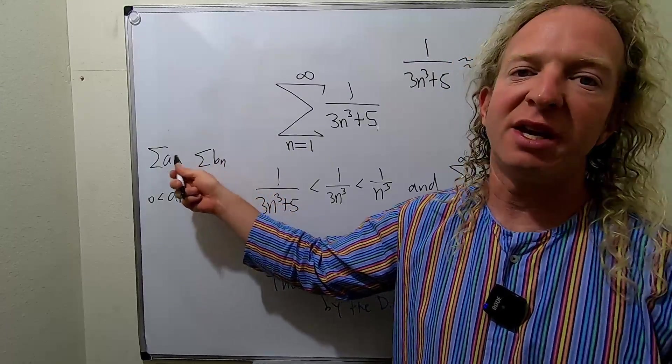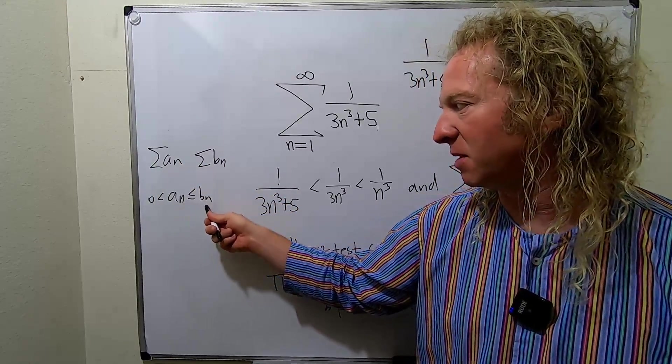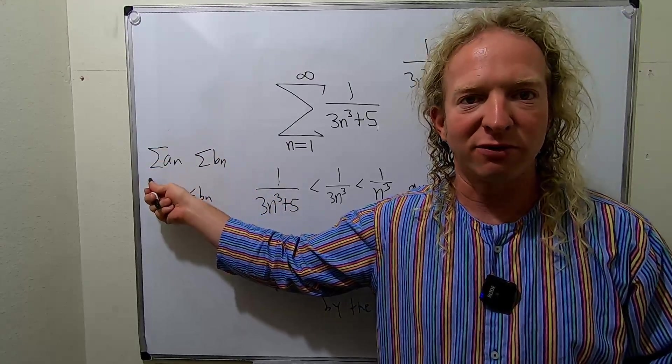If the a's are less than the b's and the sum of the b's converges, then the sum of the a's will converge.